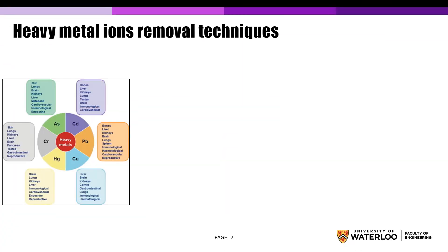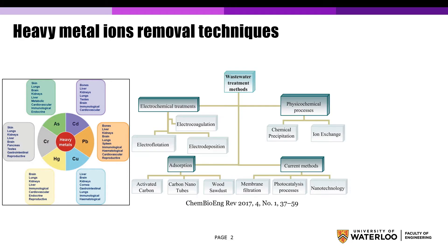Wastewater discharged from industry, agriculture, and residences contains heavy metal ions like copper, mercury, and lead. They are very toxic and non-degradable in nature. They can also threaten human health through food chain accumulation. In recent years, many methods for heavy metal ions removal from wastewater have been widely used.